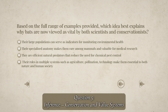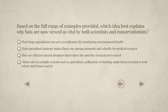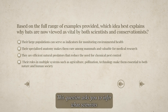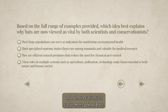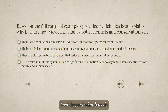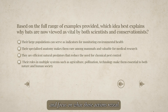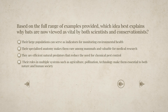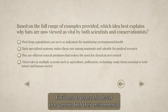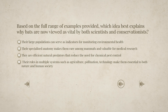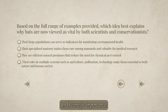Question five: Inference — Conservation and Value Systems. This question asks you to infer what scientists and conservationists value most about bats. Look beyond what bats do and focus on what those actions reveal. You'll need to choose the answer that captures both their environmental and scientific importance.